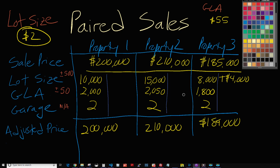The tool goes through all comparisons — property one against two, three, four, five; then two against three, four, five; and so on — and takes the average and median of all those results. You get GLA adjustment estimates from both true paired sales and adjusted paired sales, giving you comprehensive data to work with.